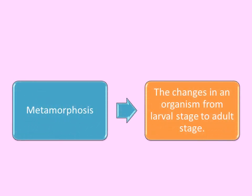The changes in an organism from larval stage to an adult stage is called metamorphosis. Metamorphosis occurs in a frog because it changes from a larval stage, that is the tadpole, into an adult frog. From tadpole, the frog is converted gradually and slowly into an adult frog. This process is called metamorphosis.